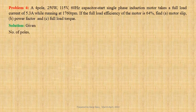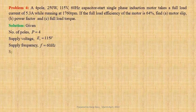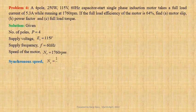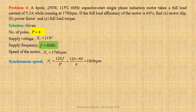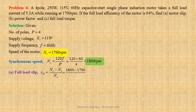Number of poles of the machine P equals to 4. Supply voltage Et equals to 115 volts. Supply frequency F equals to 60 hertz. Speed of the motor Nr equals to 1760 revolutions per minute. Let us now determine synchronous speed. Ns equals to 120F by P. Using values we get 120 into 60 divided by 4, that gives us 1800 revolutions per minute. Full load slip SfL equals to Ns minus Nr divided by Ns. Using values we get 1800 minus 1760 divided by 1800, that gives us 0.0222 per unit or 2.22 per cent.